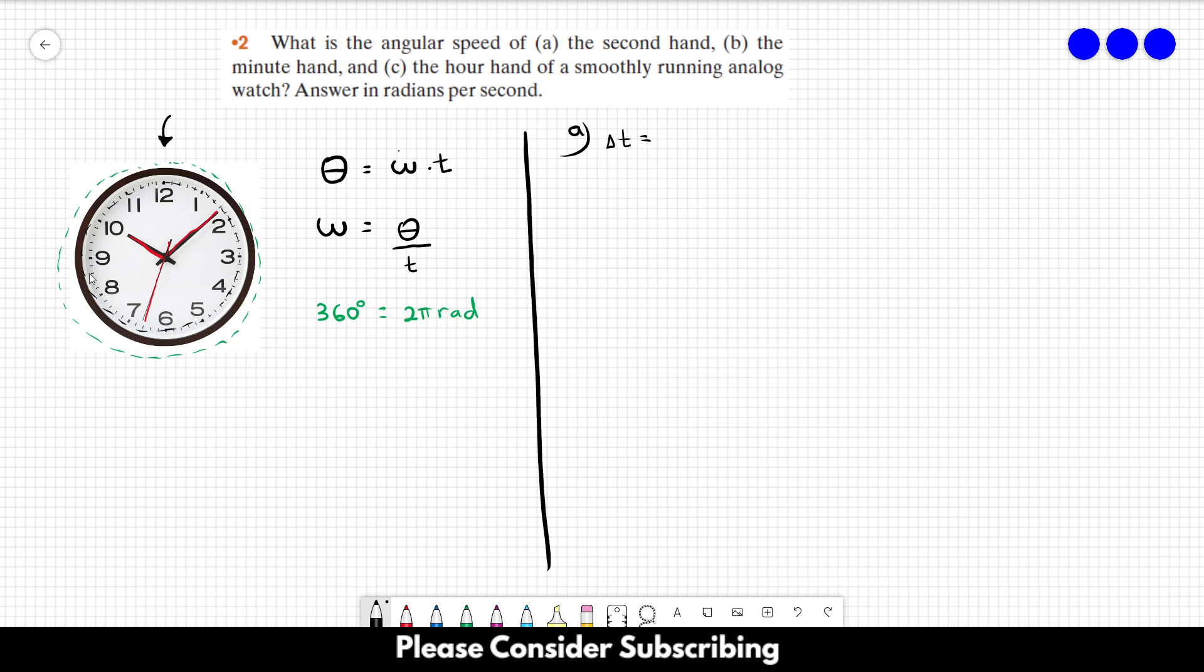In this case, for a full circle, delta t is equal to 60 seconds, and the displacement, the angular displacement, is equal to 2π radians.